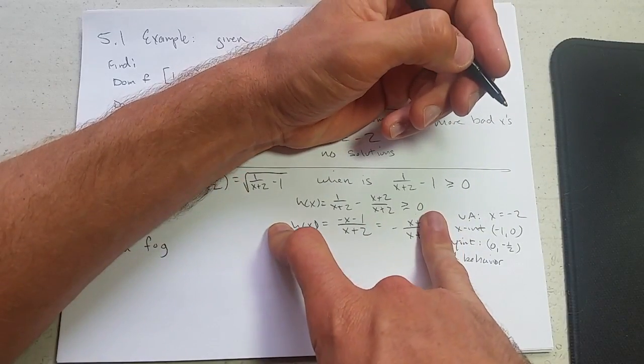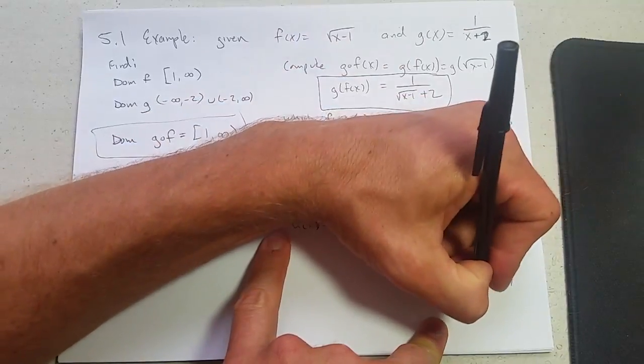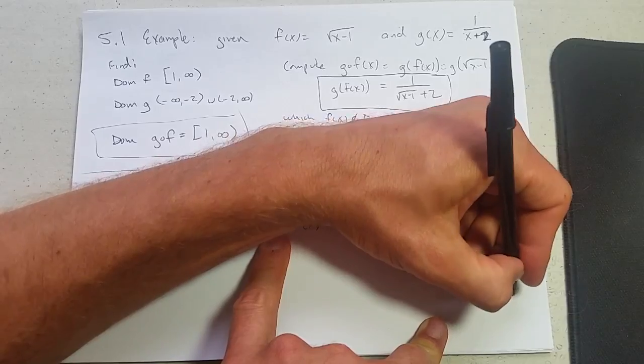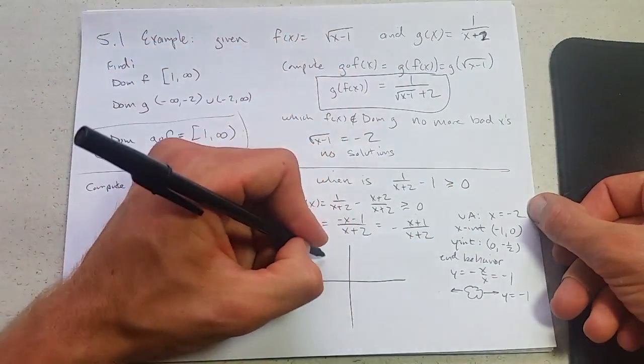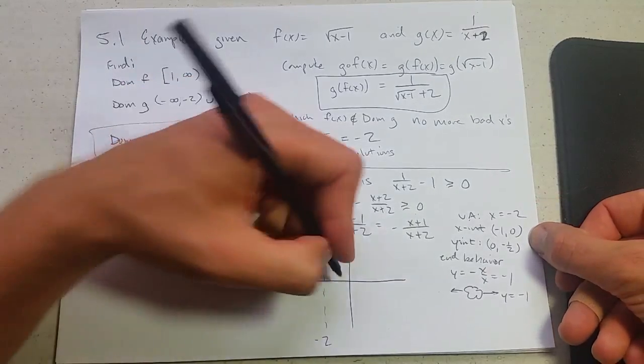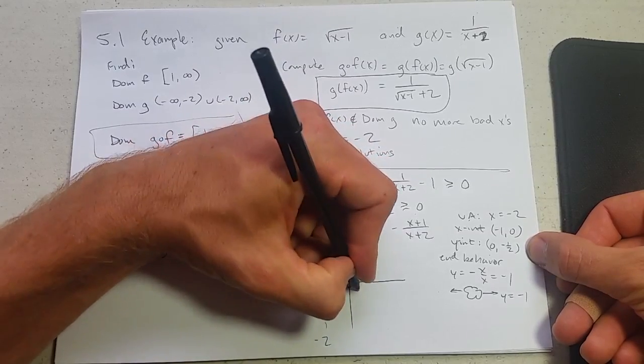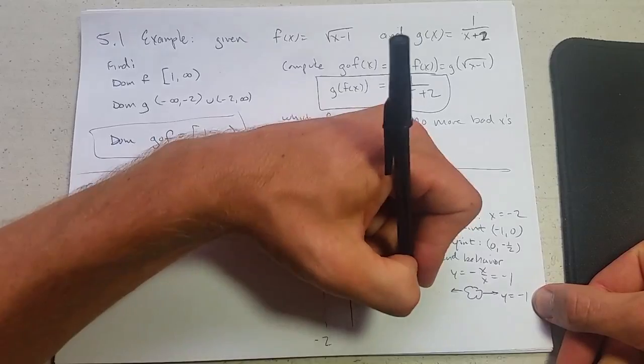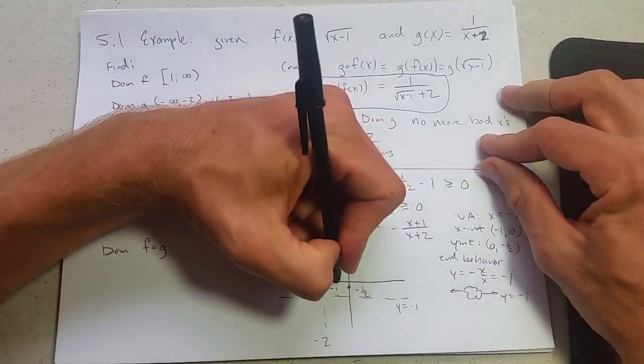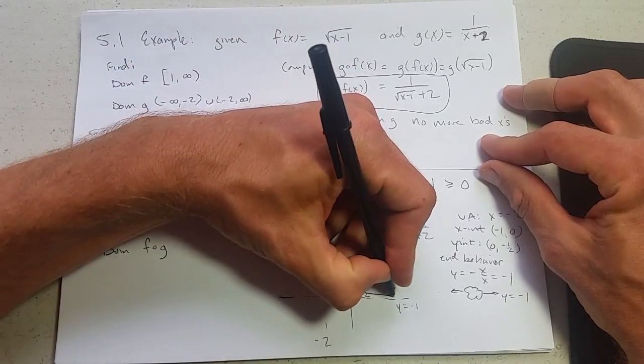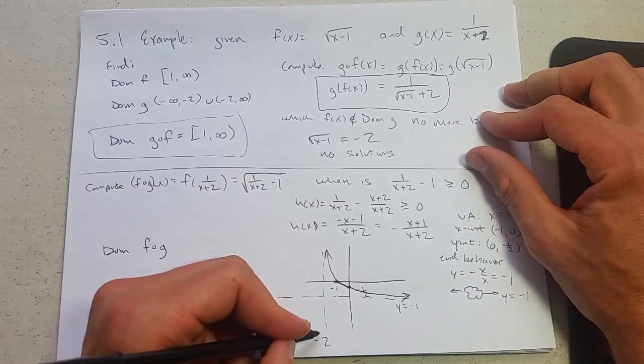And end behavior. Ignore the plus 1 plus 2 here. Ignore the plus 1 plus 2. We have negative x over x, which is negative 1. Draw the cloud. Y equals negative 1. We're going to do a really quick graph here. Vertical behavior. Y equals negative 1. Connect these two together. Now only one way to approach horizontal asymptote. This is a cross x-intercept. This is a cross asymptote.